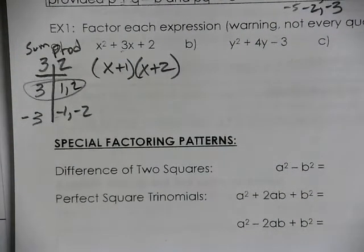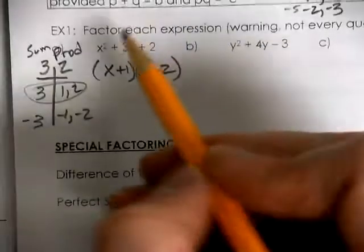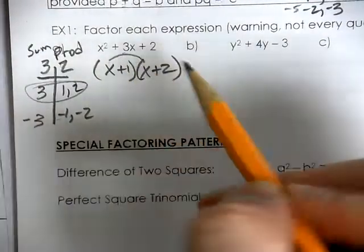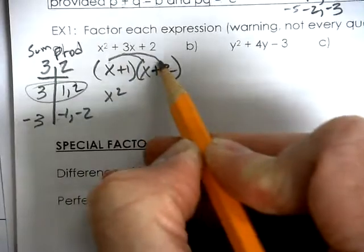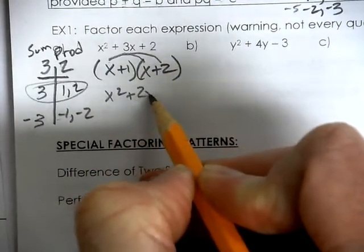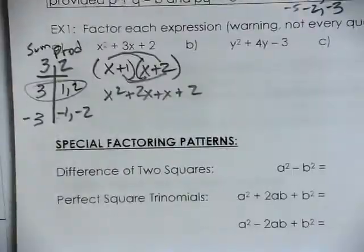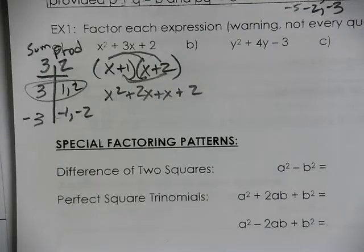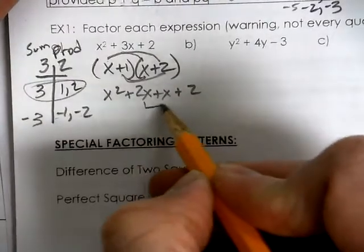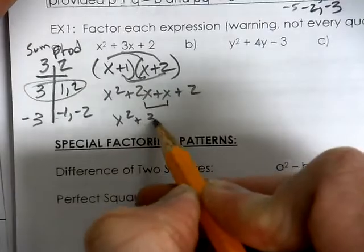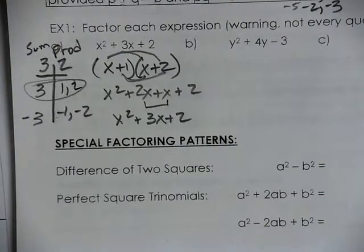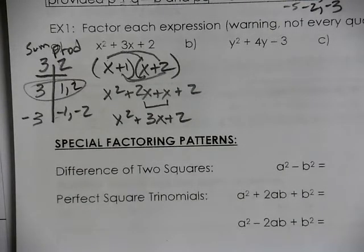A common question is, have I done it right? The best way for you to check is to go through with FOIL and multiply the front, the outer, the inner, and the last. Multiply those out and you can see when you simplify it that you're getting what the question was in the very beginning. So your two binomials produced the same trinomial that we started with.